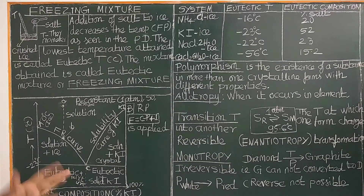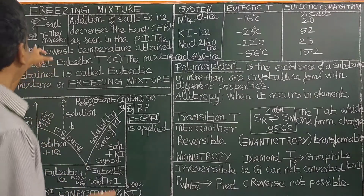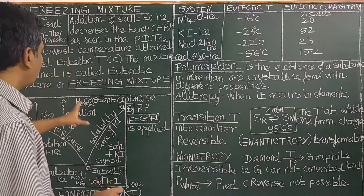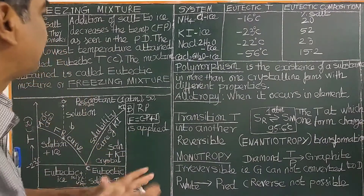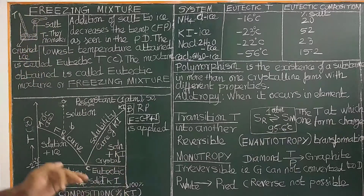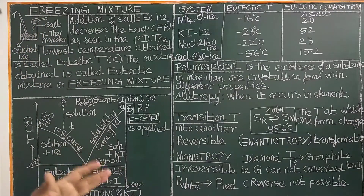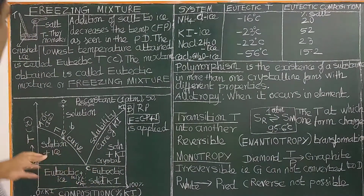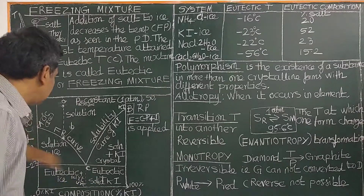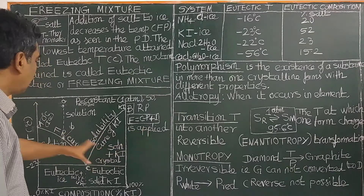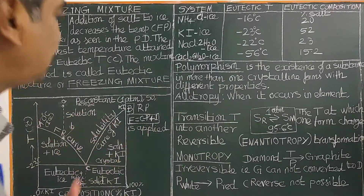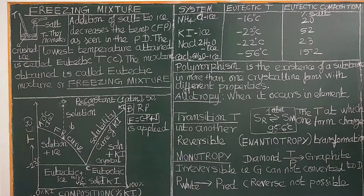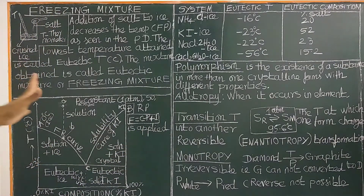In the first class, it is a salt-water system — potassium iodide water, potassium iodide ice system — a eutectic system. It is a phase diagram, a continuation of the freezing mixture.